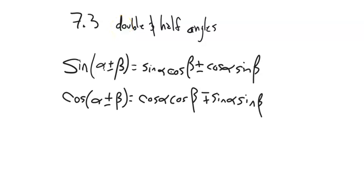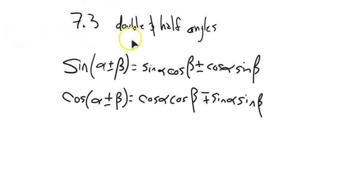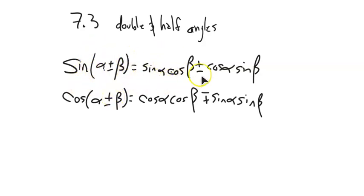This is map 142. We're going to take a peek at section 7.3 on double and half angles. We're going to build these formulas off of the work we've done with the sum and difference relationships for sine and cosine, which we know from last time.